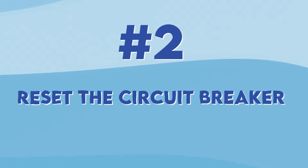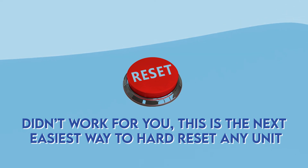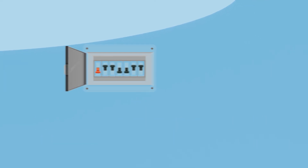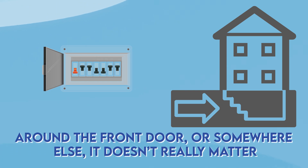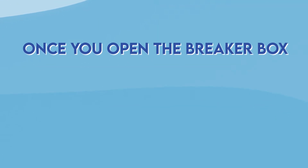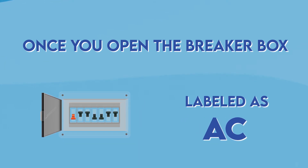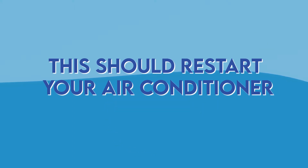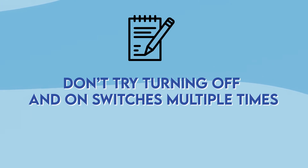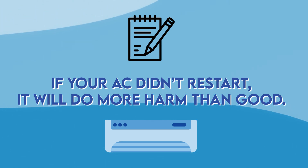Second, reset the circuit breaker. If the reset button didn't work for you, this is the next easiest way to hard reset any unit. The breaker box is usually located in your basement, around the front door, or somewhere else. Once you open the breaker box, simply find the switch labeled as AC and switch it off, then switch it back on — this should restart your air conditioner. However, as a side note, don't try turning the switch off and on multiple times if your AC didn't restart, as that will do more harm than good.